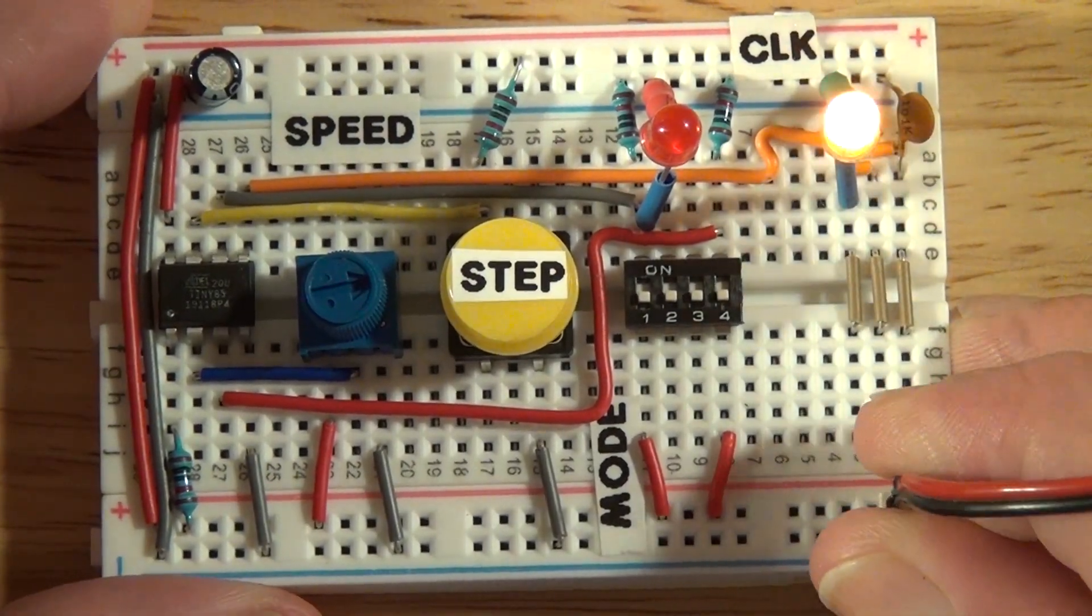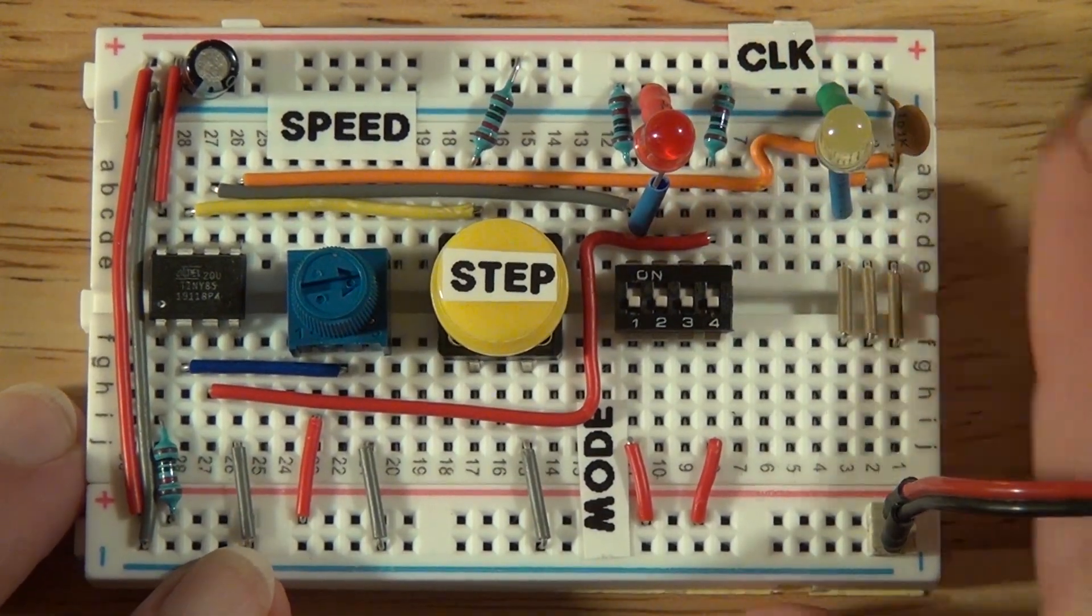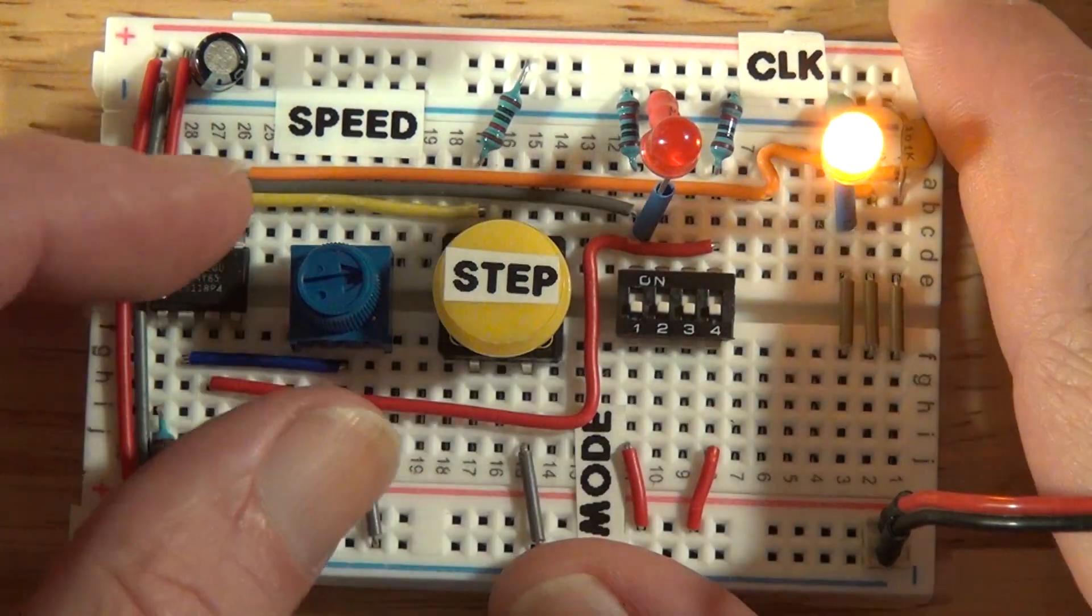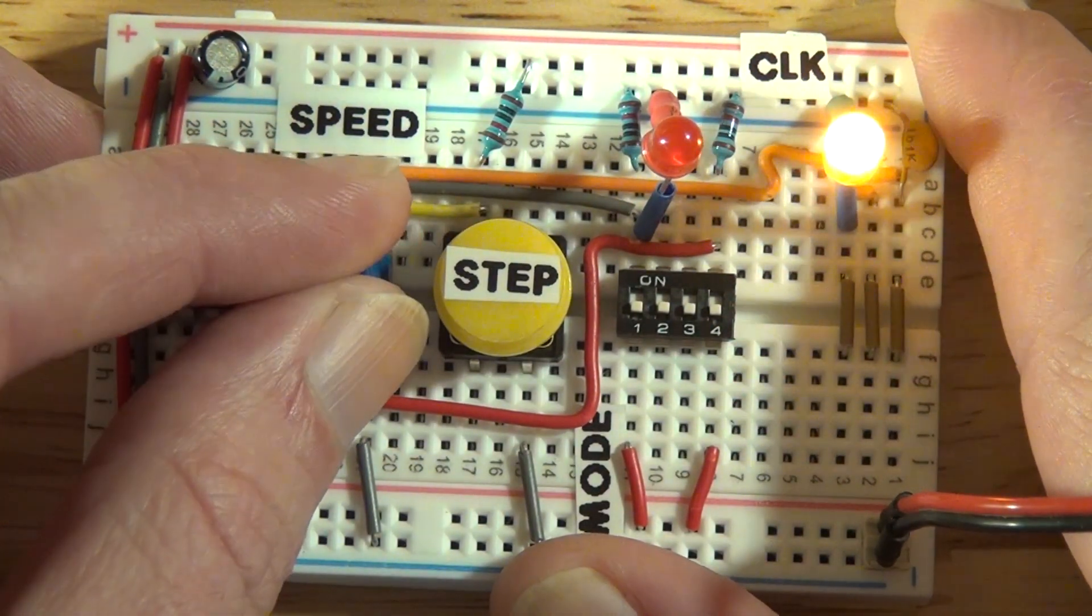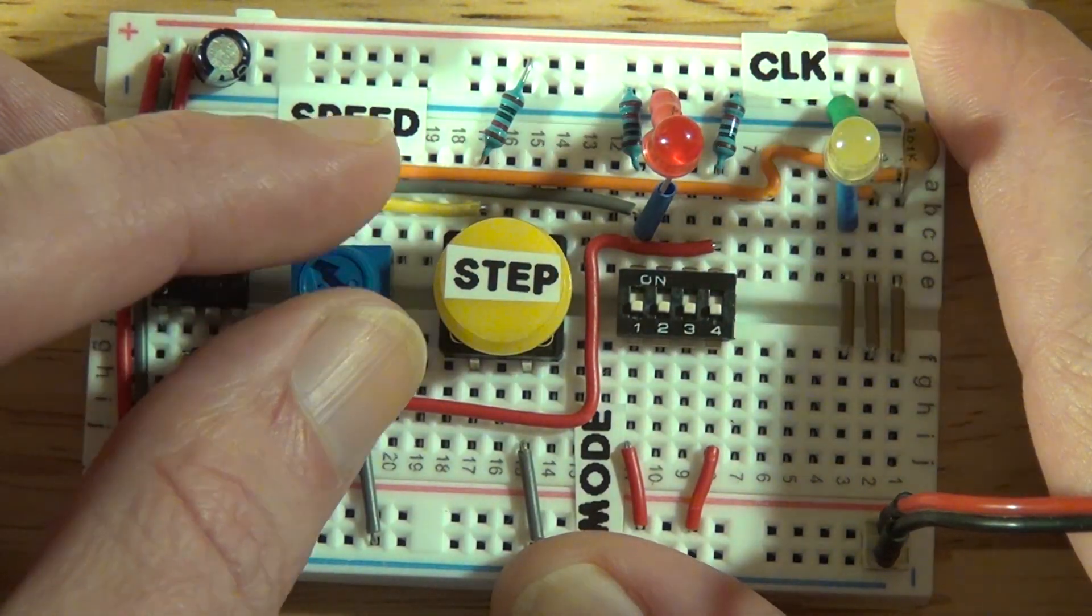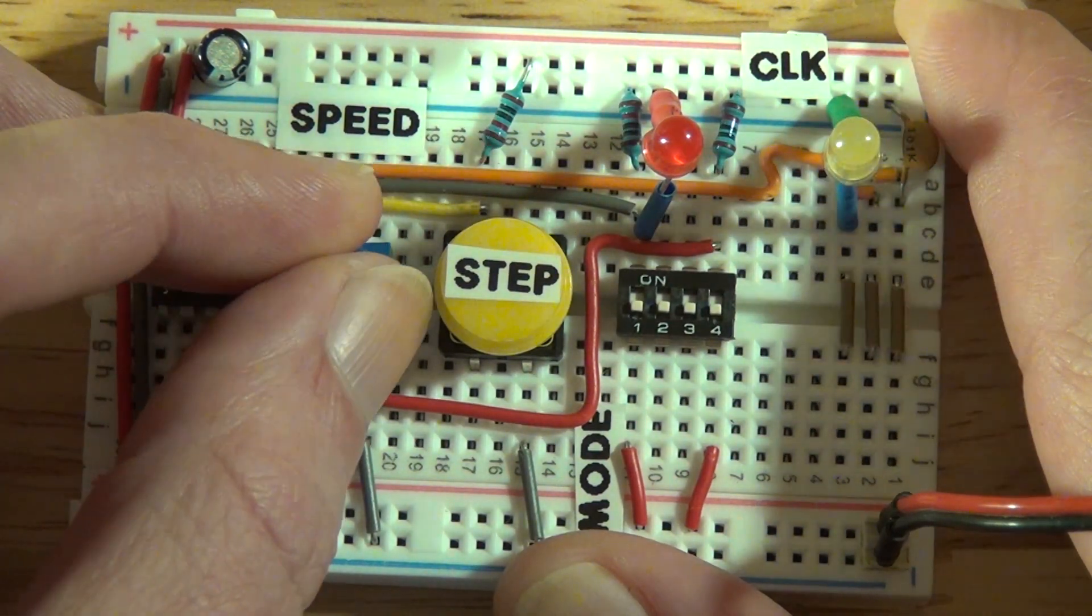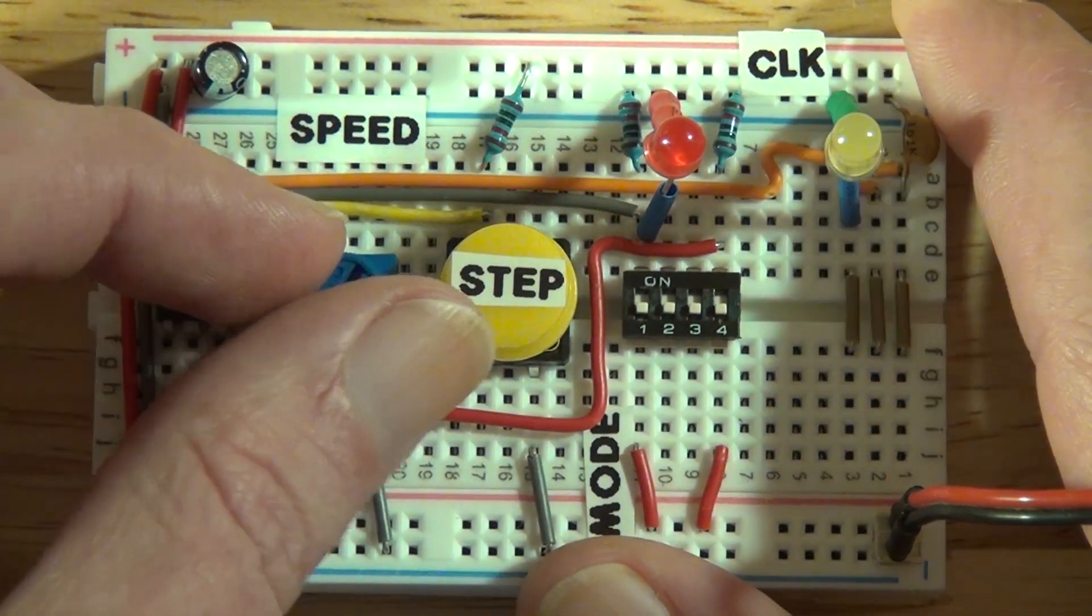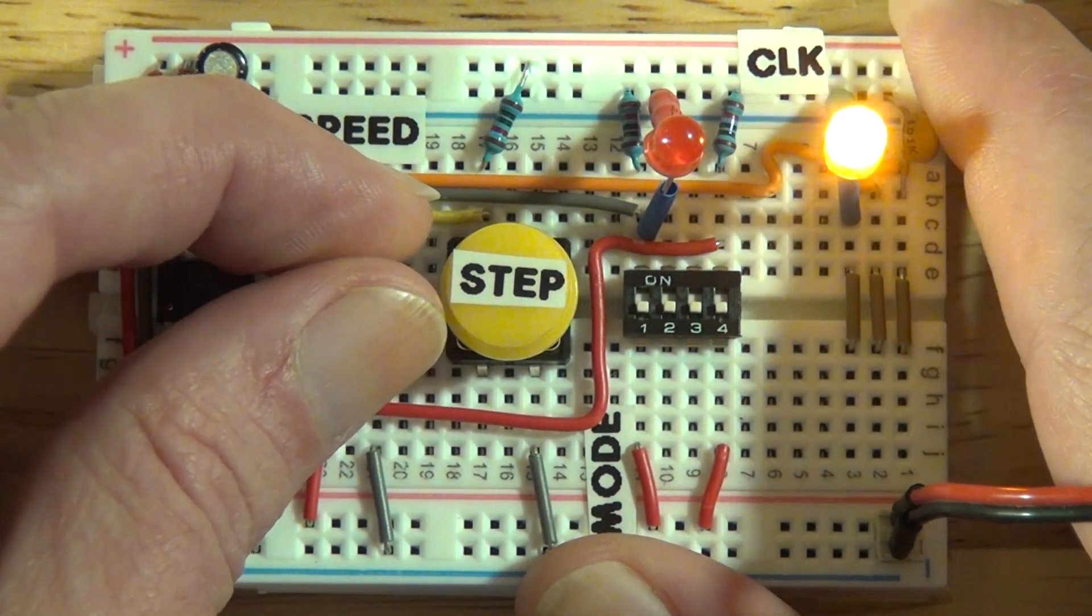Now just to demonstrate real quickly how this works, if you apply power here, it's in auto mode. So it starts blinking, and this is the clock output then, and that is controlled by the potentiometer there. So you can slow it down, you can slow it down to about one hertz, and then you can speed it all the way up.